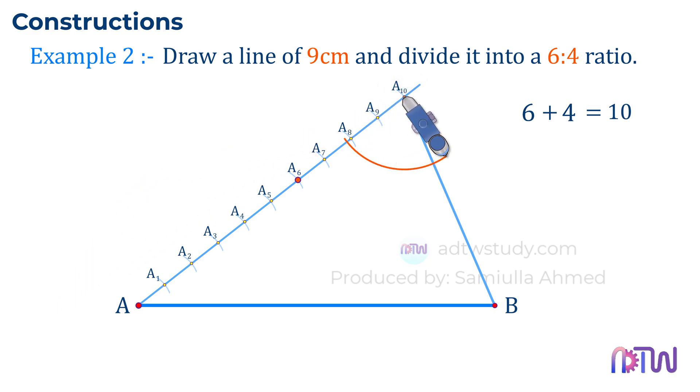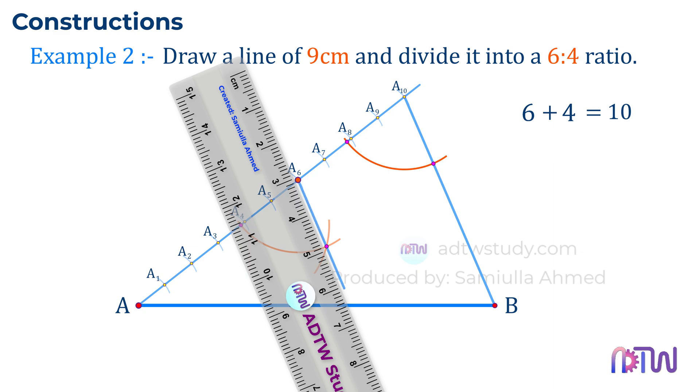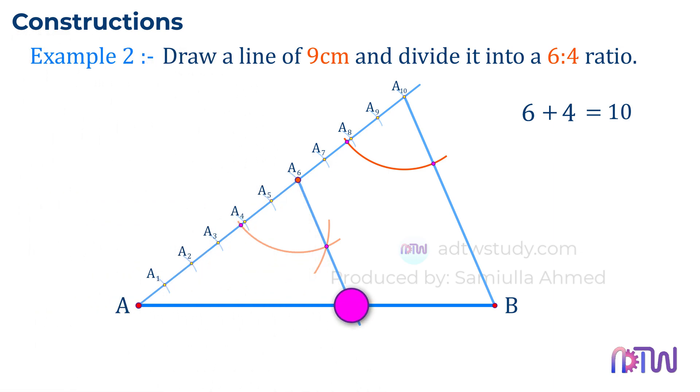To do so, take a compass, adjust it to some length, and using this point as center draw the arc as shown. After this, without changing the length of the compass, place the compass at this point and draw the arc as shown. Next, take the distance between these two points on this compass, and by keeping the compass at this point, cut the arc on the previous arc as shown. In the end, draw the line from point A6 passing from this obtained point. Therefore, we got the point by dividing the line into a 6 to 4 ratio. This completes the construction part.